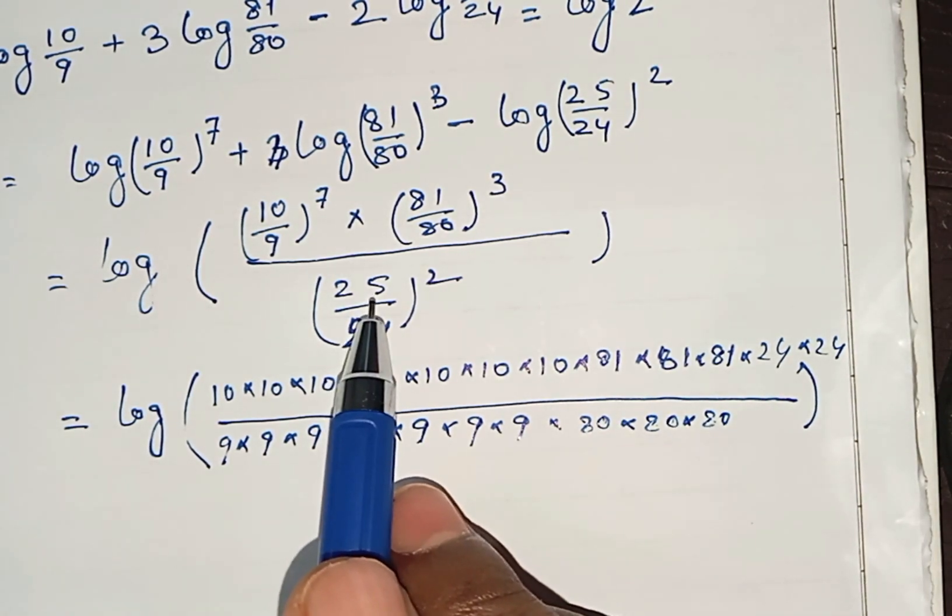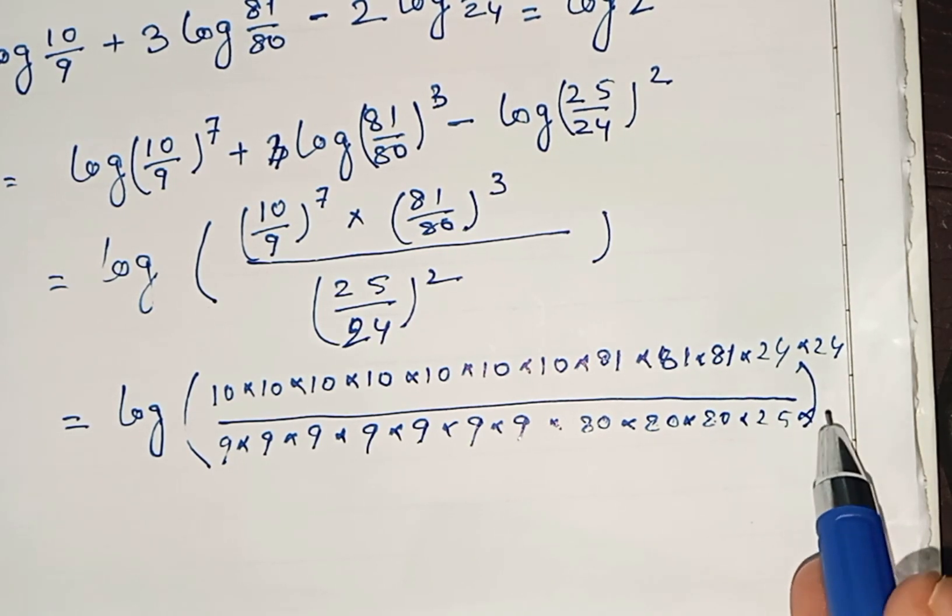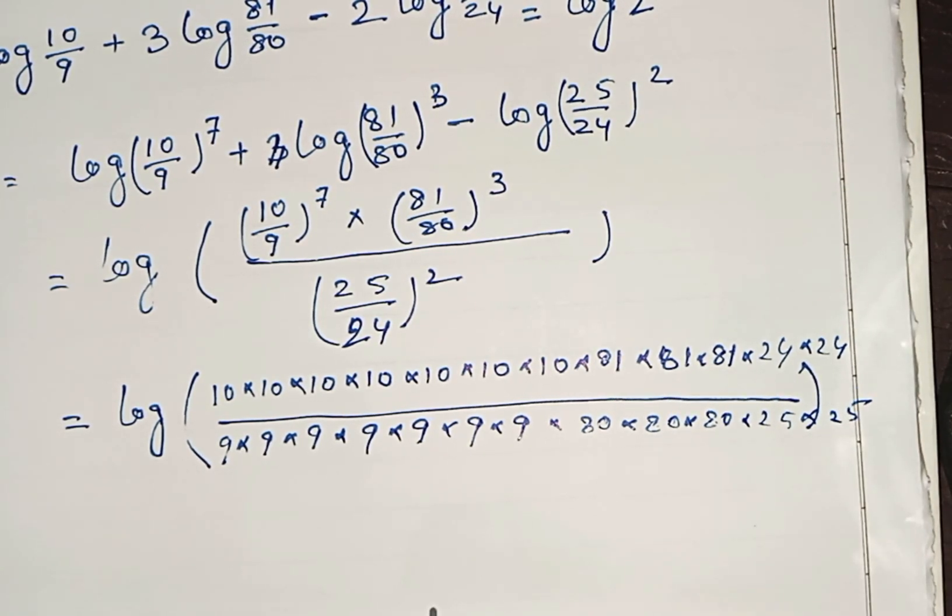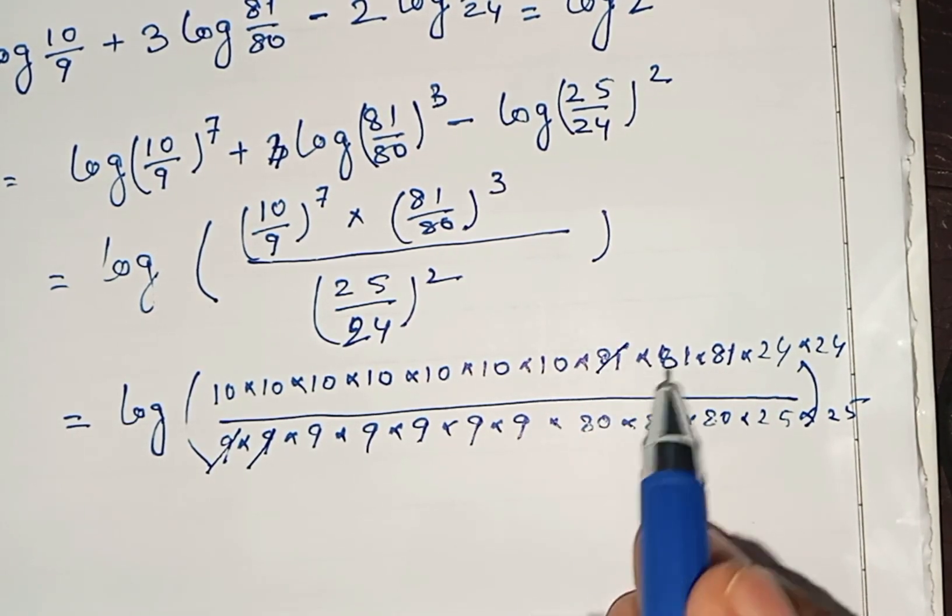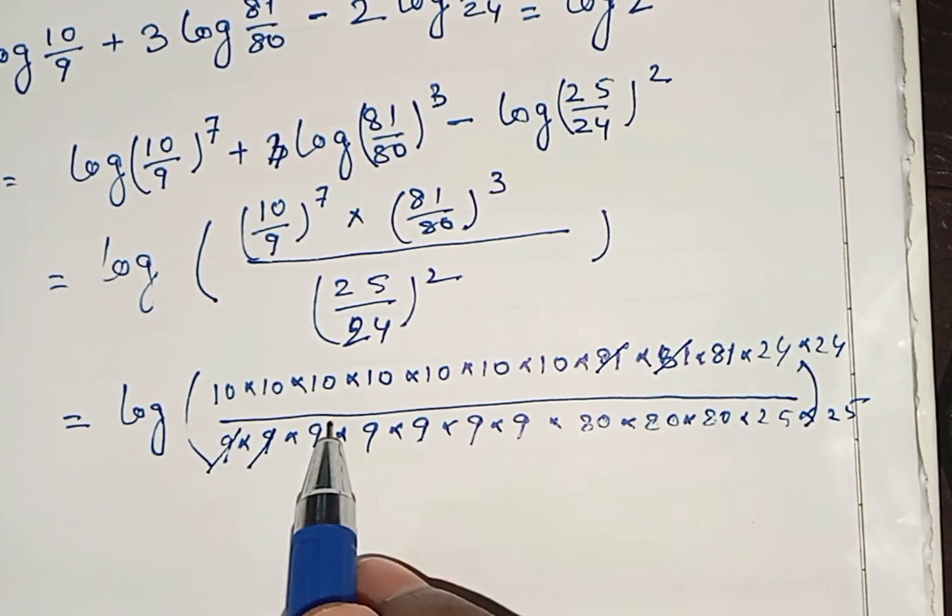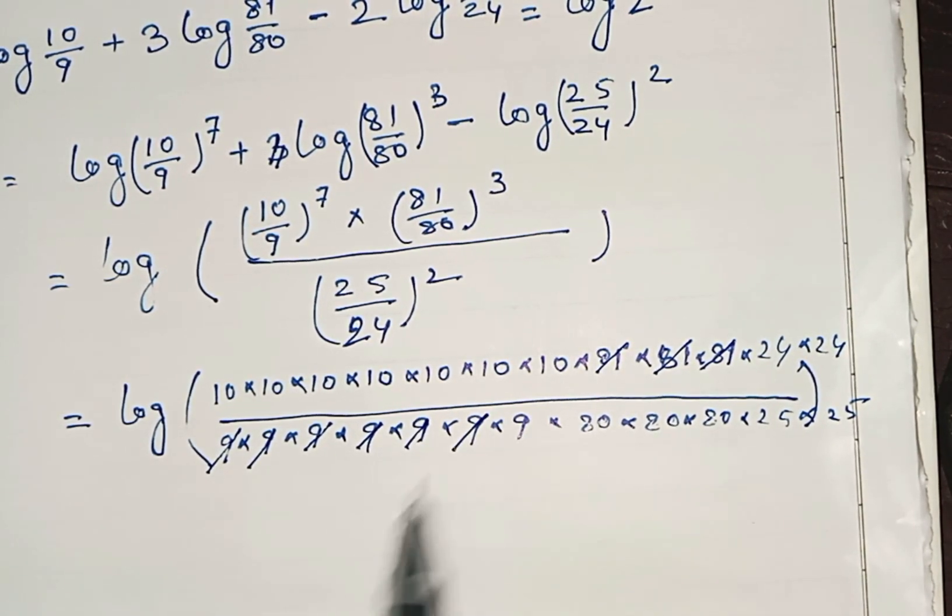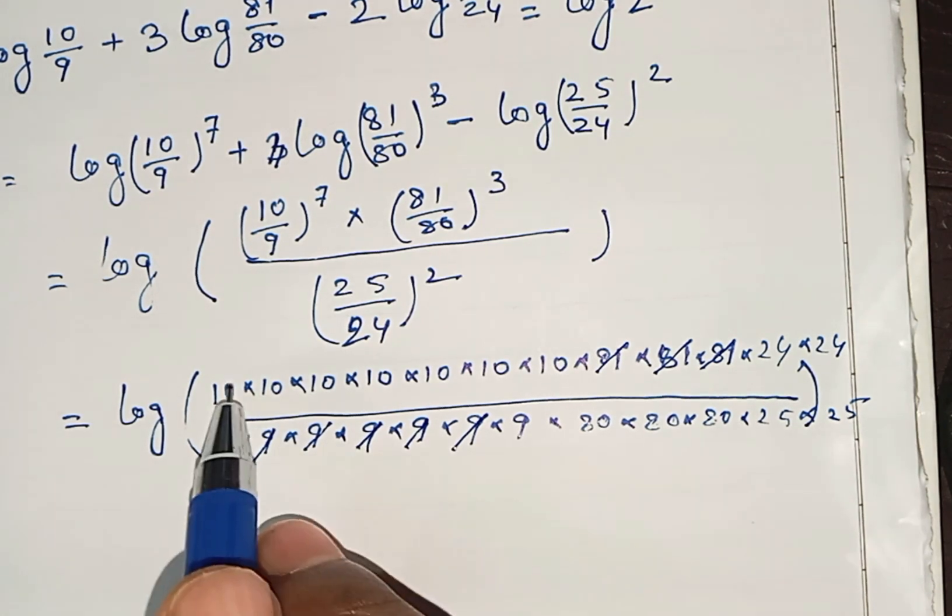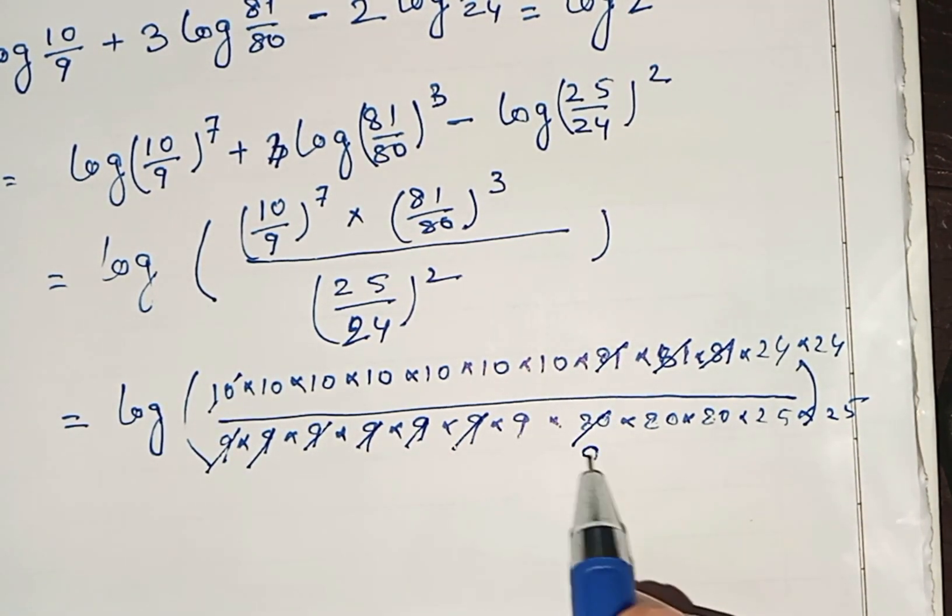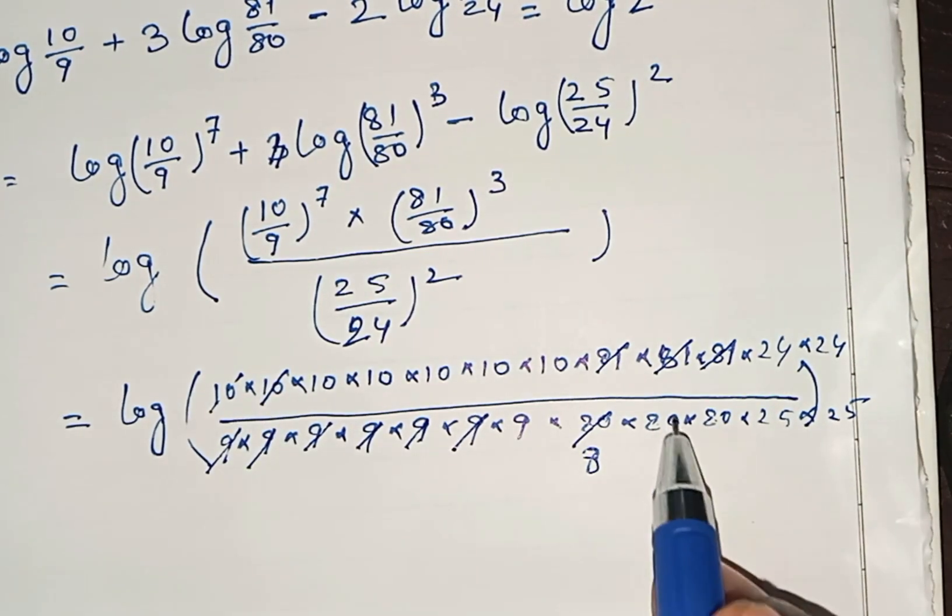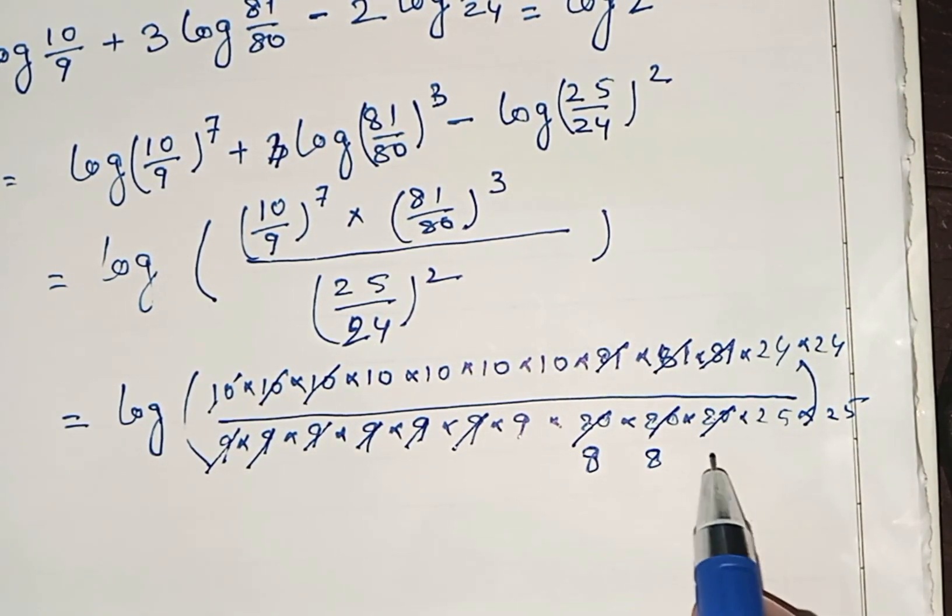Now 9, 9 is 81, and again 81, 9, 9, again 81, 9, 9, cut that. Then 10, that is 8, 10, 8, 10, 8.